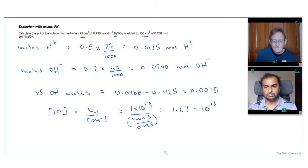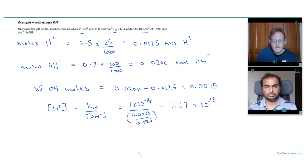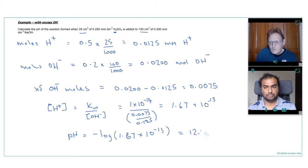So that comes to 1.67 times 10 to the minus 13. And then once we know the hydrogen ion concentration, we can work out the pH. So minus the log of 1.67 times 10 to the minus 13. And that gives us 12.78, which is what we'd expect for excess hydroxide ions.